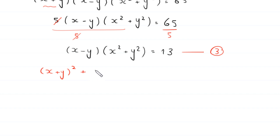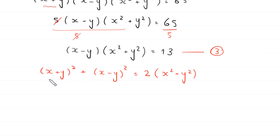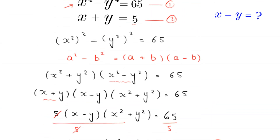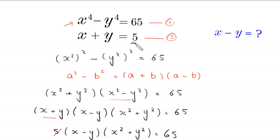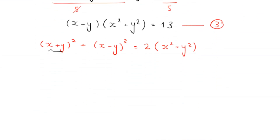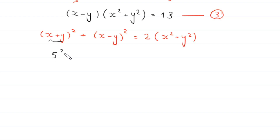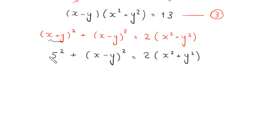Now we use the algebraic identity: (x plus y) whole squared plus (x minus y) whole squared is equal to 2 times (x squared plus y squared). In this identity we replace x plus y with its value of 5 from equation 2. This becomes 5 squared plus (x minus y) whole squared equals 2 times (x squared plus y squared), which gives 25 plus (x minus y) whole squared equals 2 times (x squared plus y squared).